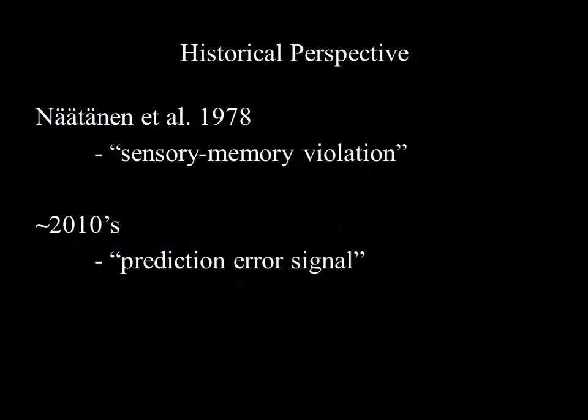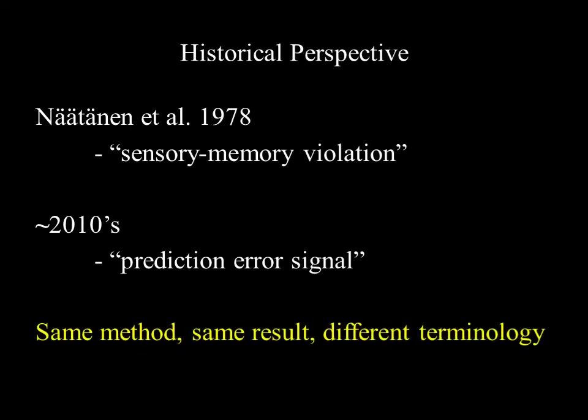Let's now look at the origins and progression of mismatch negativity research. It was introduced by Naatanen in 1978 and described as a measurement of sensory memory violation, although more recently this terminology has been changed to keep up with the predictive coding theory of brain function, and MMN is now referred to as a prediction error signal. However, it should be noted that this is just a change in terminology, and the methods and results have not substantially changed over this time.